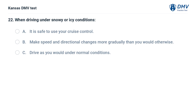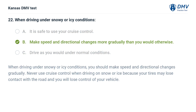When driving under snowy or icy conditions: A. It is safe to use your cruise control. B. Make speed and directional changes more gradually than you would otherwise. C. Drive as you would under normal conditions. The answer is B. Make speed and directional changes more gradually than you would otherwise. When driving under snowy or icy conditions, you should make speed and directional changes gradually. Never use cruise control when driving on snow or ice because your tires may lose contact with the road and you will lose control of your vehicle.